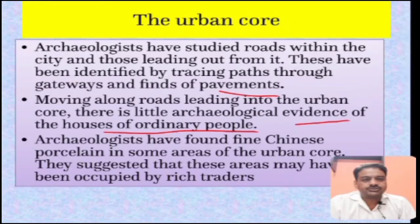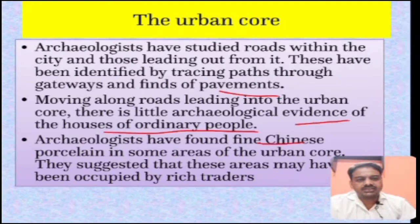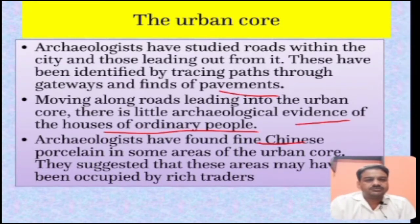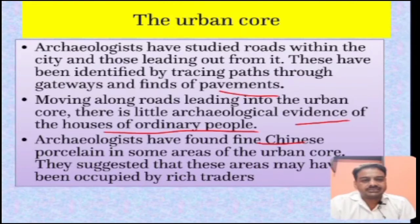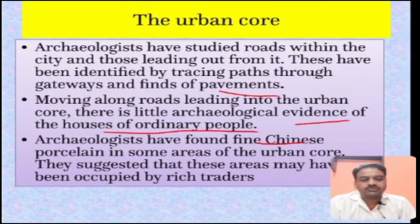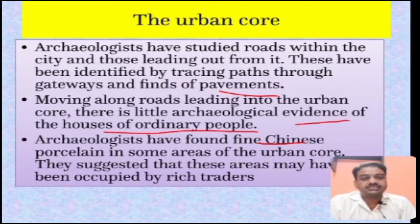Archaeologists have found fine Chinese porcelain in some areas of the urban core, signifying that there was trade between India and China at that time and that these porcelain items came to Vijayanagara. This also tells us that the people of Vijayanagara were very affluent and able to afford such exotic items. These areas may have been occupied by rich traders, because trade was the backbone of Vijayanagara and there was a lot of trade from South India, giving them enough income to afford luxury items like Chinese porcelain.